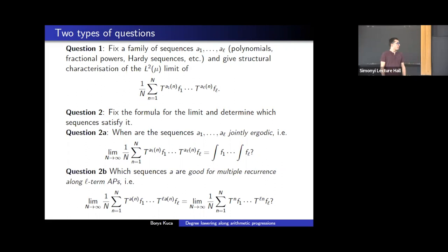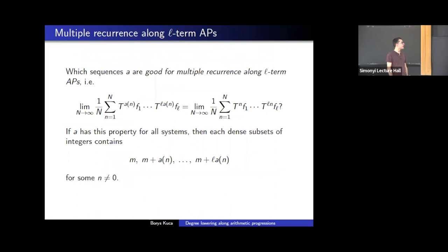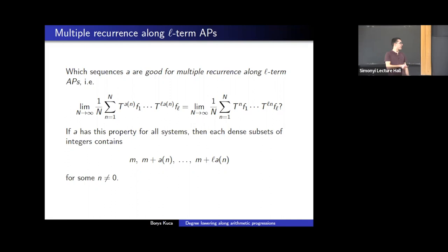Today I'll focus on the second interesting subcase: I want to classify sequences A which are good for multiple recurrence along L-term arithmetic progressions, in the sense that a certain identity is satisfied. If we can show that sequences are good for multiple recurrence along L-term APs, then we can use Furstenberg's multiple recurrence result to show that each subset of integers contains an arithmetic progression of length L+1 with differences coming from the sequence A. This gives a very tangible combinatorial application.